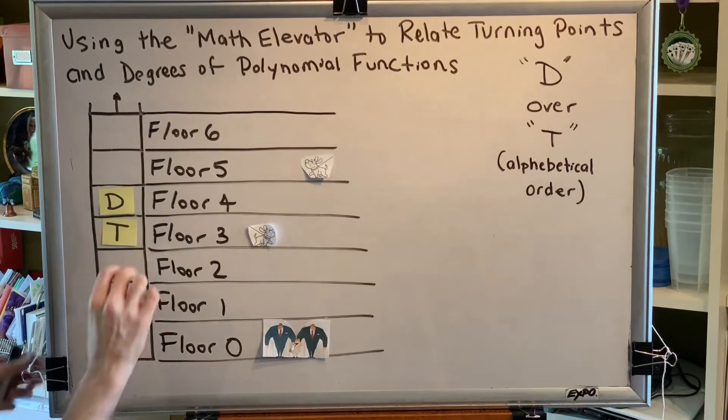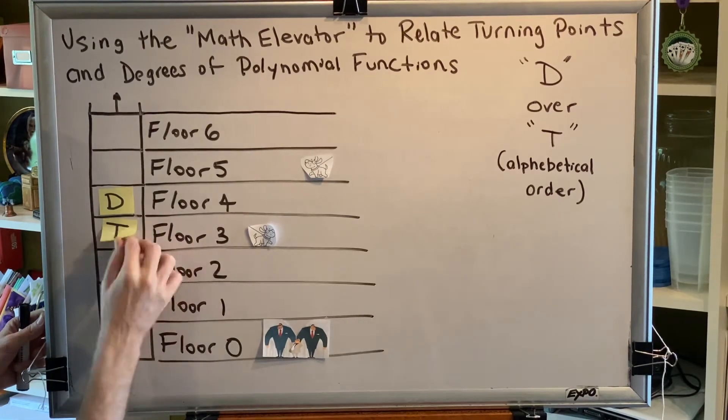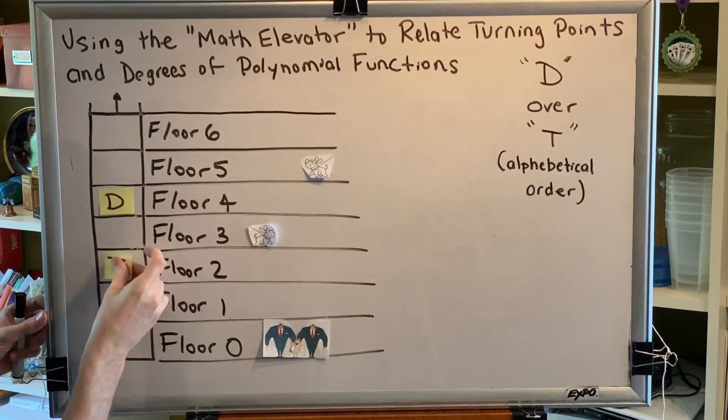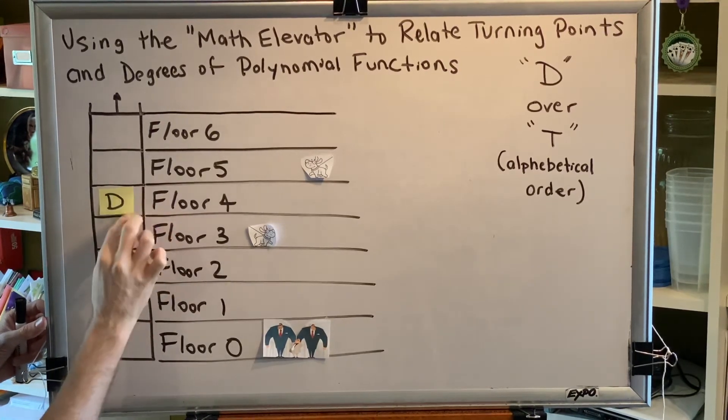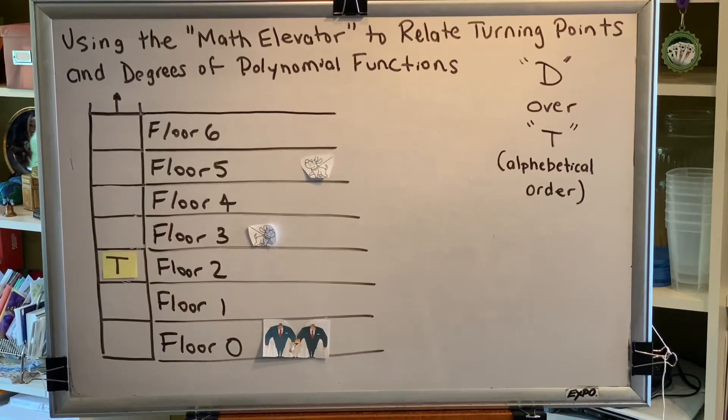Let's change the problem. Let's say now that the turning point is down here on the second floor and the question asks you about the degree of the polynomial function. What are all the possible degrees of the polynomial function?